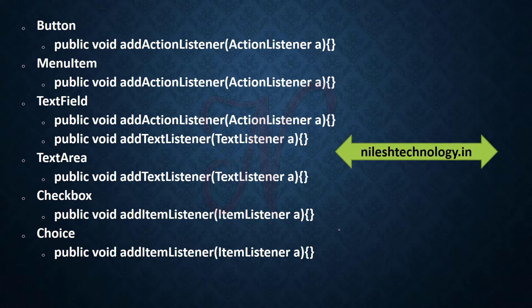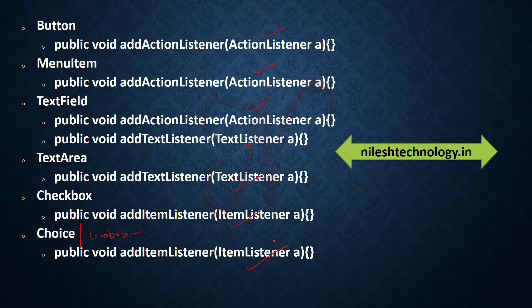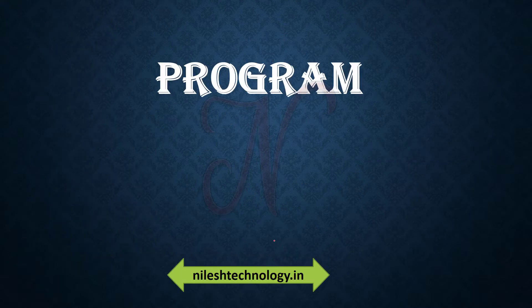Looking at which components use which listeners: Button uses ActionListener, Menu uses ActionListener, TextField uses ActionListener, TextArea uses TextListener, CheckBox uses ItemListener, and Choice or ComboBox also uses ItemListener. Remember these mappings.